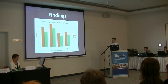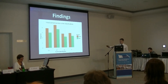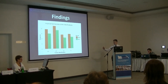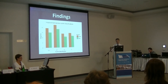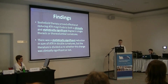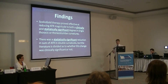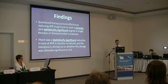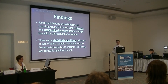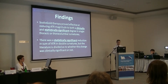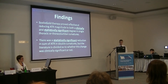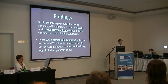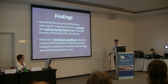In the table shown here, you can see the double curvature on the left, spinal fusion curvatures second, then single thoracic and thoracolumbar curvatures before and after treatment. Our findings show that scoliosis therapy proved effective at reducing ATR magnitude to both a clinically and statistically significant degree in single thoracic and thoracolumbar curvatures. There was also a statistically significant reduction in double curvatures, though the literature is divided on clinical significance as it did not reach the two-degree measurement error threshold.